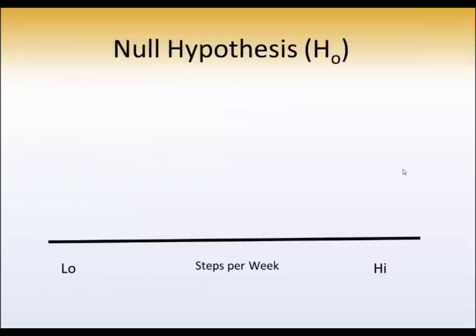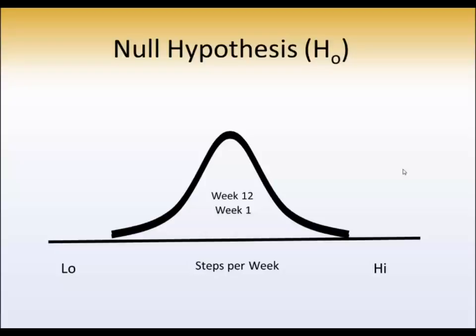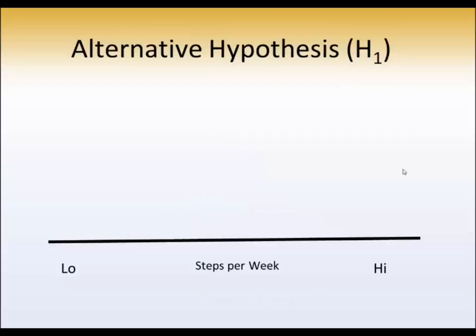We still would have the null hypothesis the same. In this case, is there a difference between the number of steps taken at one week and the number of steps taken at week 12? If the null hypothesis is true, then the difference between those two means would be zero. If the alternative hypothesis is true, we would find a difference between the two means.